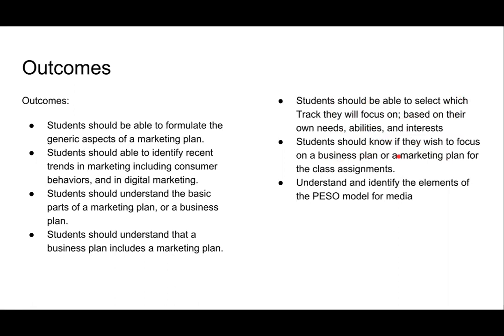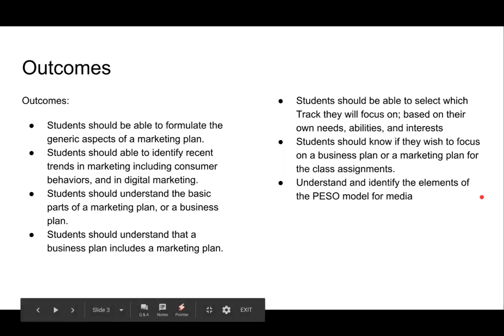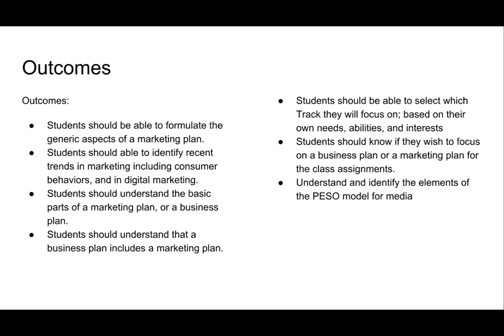Their profit comes from helping other people — in the case of a car show, those manufacturing cars, accessories, and so forth. You should be able to pick the track that works best for you, know if you need a business plan or a marketing plan, and understand the PESO model — paid, earned, shared, and owned media — which is a way of classifying virtually any kind of media.